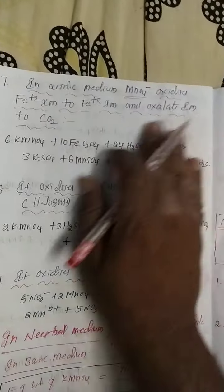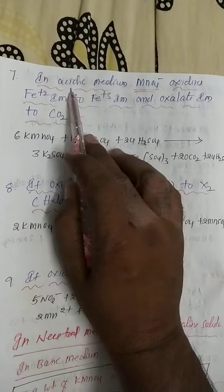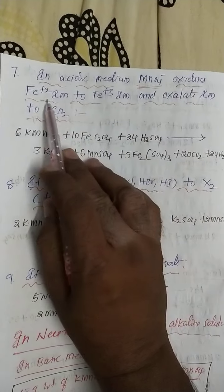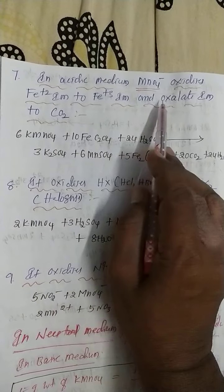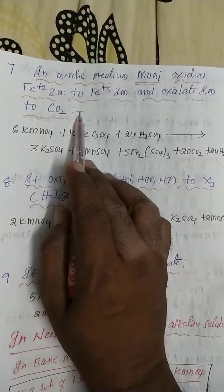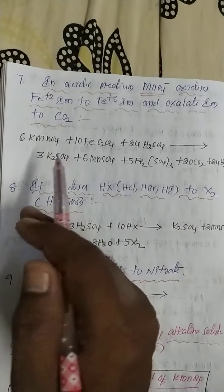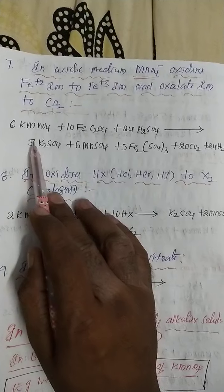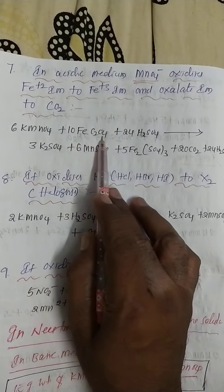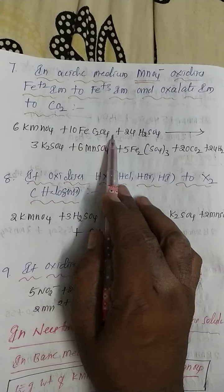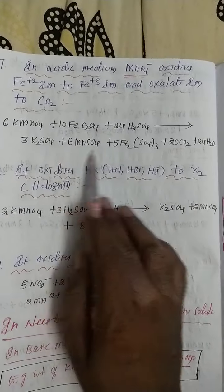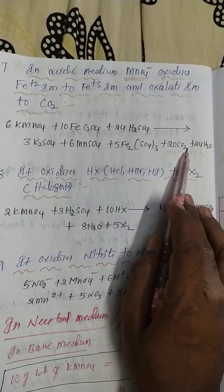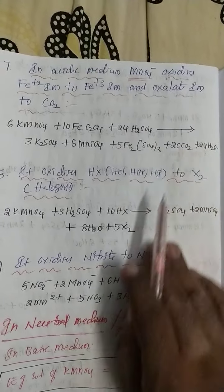In acidic medium, MnO₄⁻ oxidizes Fe²⁺ to Fe³⁺ and oxalate ions to carbon dioxide — already discussed previously. The reaction involves KMnO4 with iron oxalate (FeC₂O₄), converting Fe²⁺ to Fe³⁺ while oxalate ions are also oxidized.